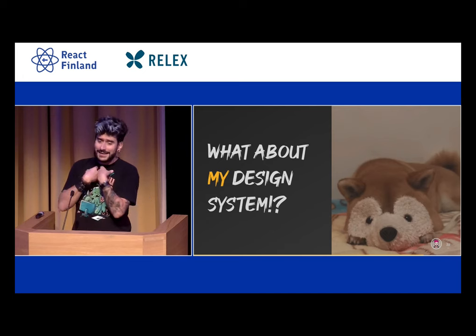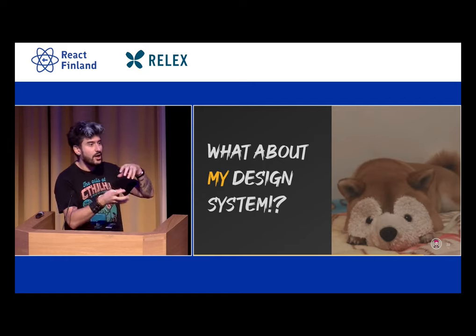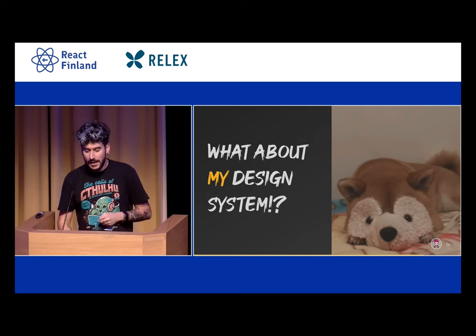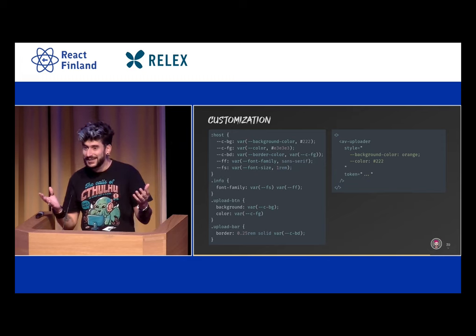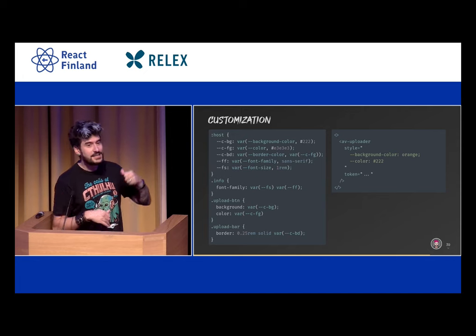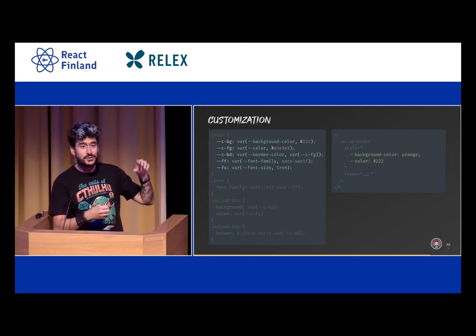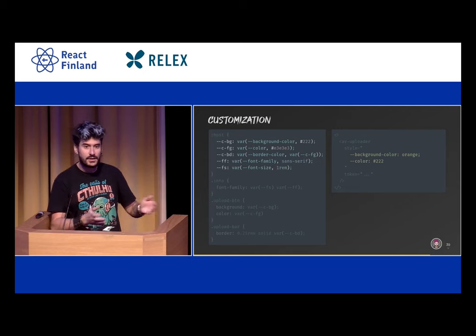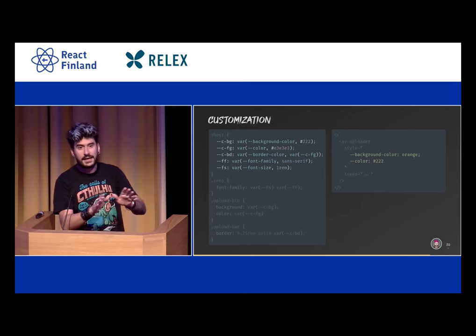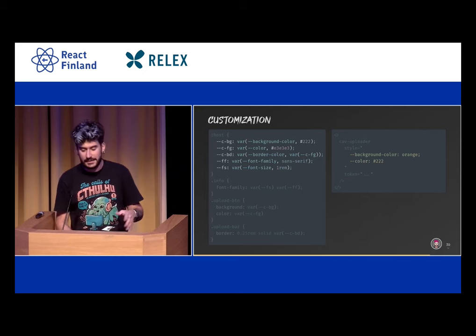But what about my design system? I'm working with a design system and I don't want the default rendering of your uploader or player — I want to personalize it with my own style. That's also fine. You just build an API outside of your component for that, by exposing dedicated properties in the form of CSS custom properties. You just pass them as styles to your component when you load it — background color, foreground color, border, icon look — and that's all. It's just passing a few CSS properties to have it perfectly aligned with the rest of your design and brand.